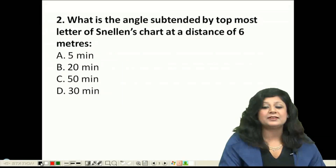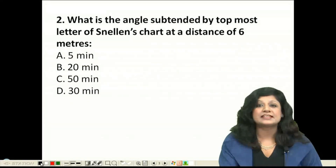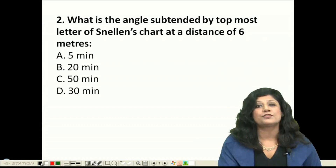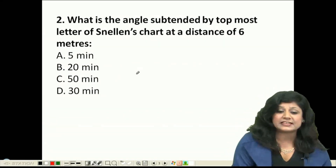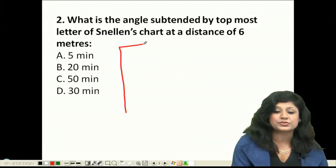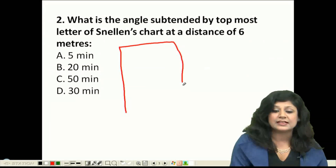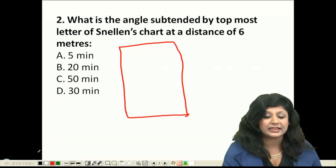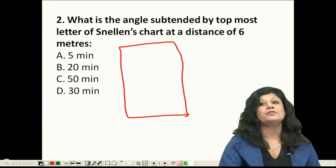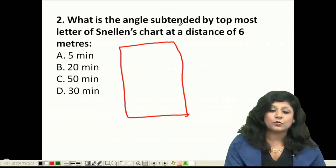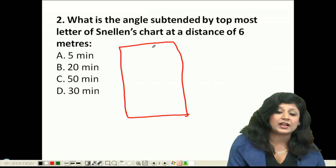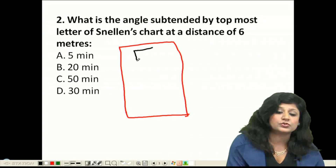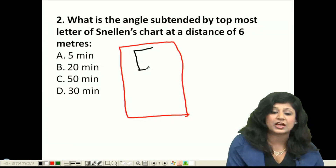The question is: what is the angle subtended by the topmost letter of the Snellen's chart at a distance of 6 meters? The Snellen's chart is the most common visual acuity chart used for screening. The topmost letter is the largest letter on the chart.